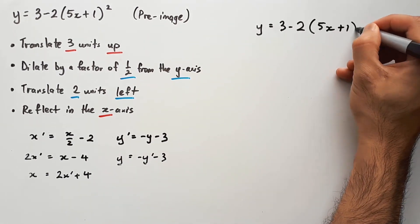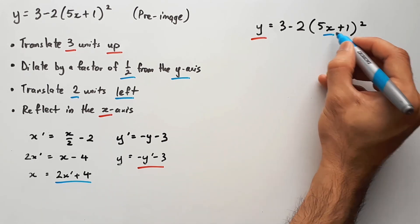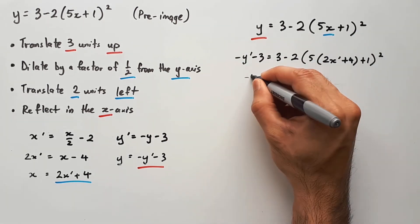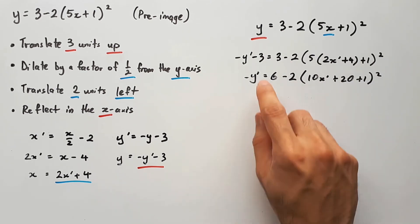From here, substitute -y' - 3 into y, and 2x' + 4 into x. And as you're rearranging this equation to make y the subject, you can remove the dashes somewhere along the way.